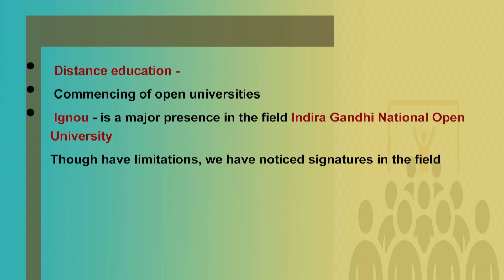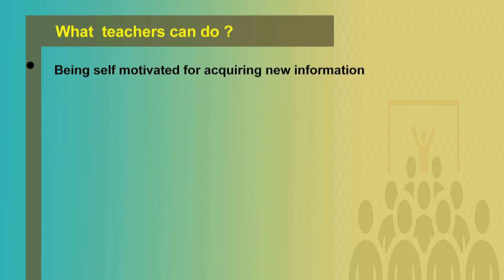The higher education sector in India has different types of methods, practices, resources, technologies, and methods of practicing. We have worldwide-identified teachers, highly oriented systems, studios, methods, internet, labs, and technical supports.